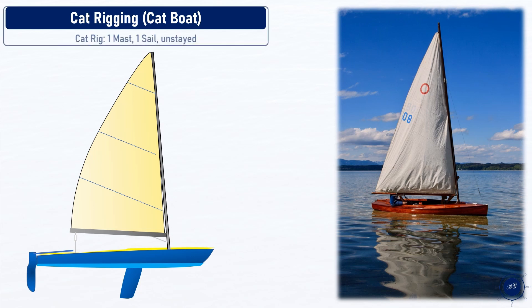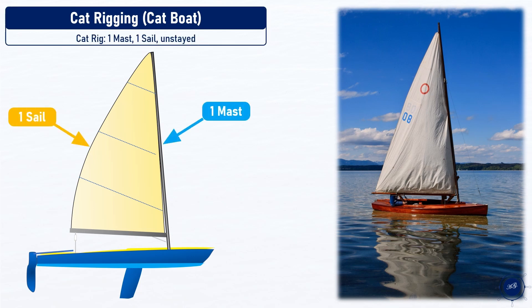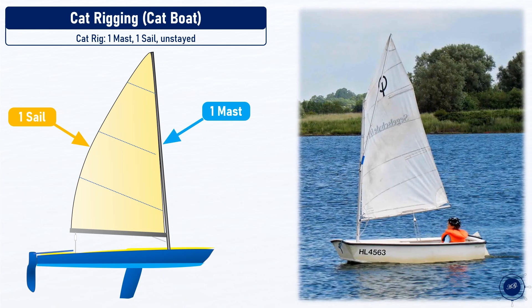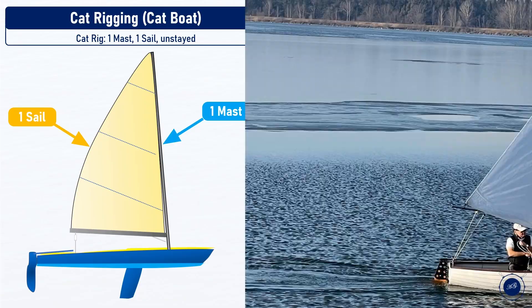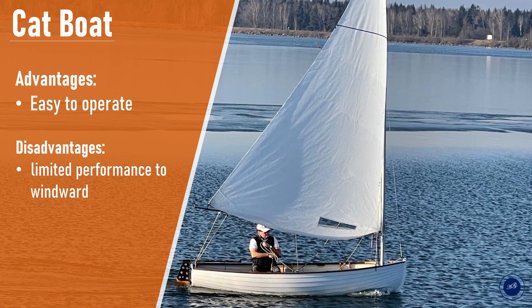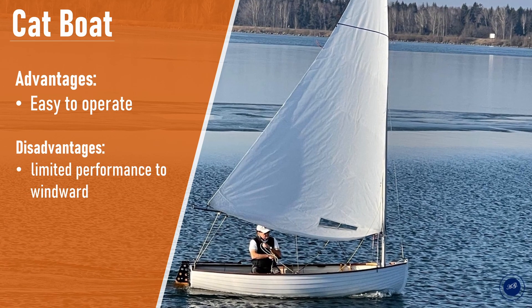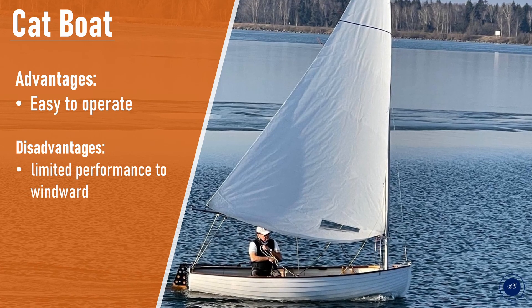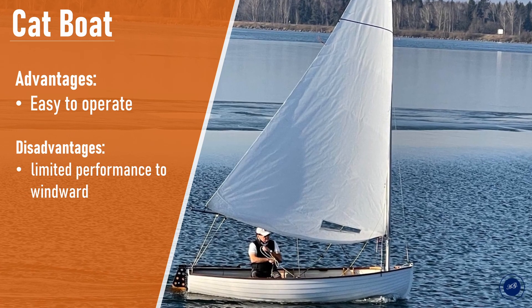There is only one sail on one or more masts. The mast is unstayed — that is, not held in place by additional metal cables such as the forestay, backstay, or lateral shrouds. Such boats are very easy to operate, and almost all one-person dinghies are catboats. However, the lack of a headsail results in limited performance to windward.